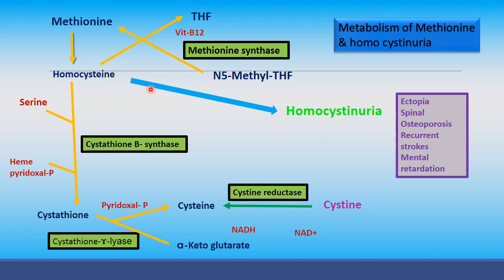Cystathionase lyase deficiency may give rise to accumulation of cystathionine. Excess homocysteine may cause homocysteinuria, with symptoms including ectopia lentis, spinal osteoporosis, recurrent strokes, and mental retardation. 5-methyltetrahydrofolate is converted to tetrahydrofolate, and in the presence of vitamin B12, homocysteine is again converted into methionine. If this does not occur, excess homocysteine may cause homocysteinuria.